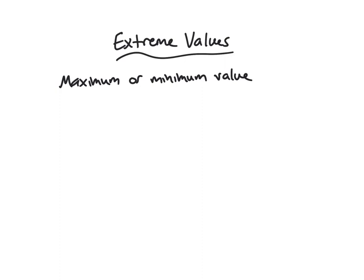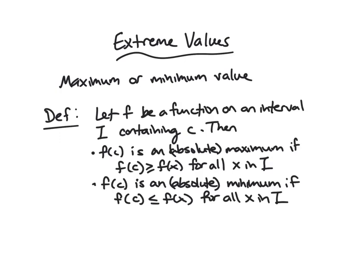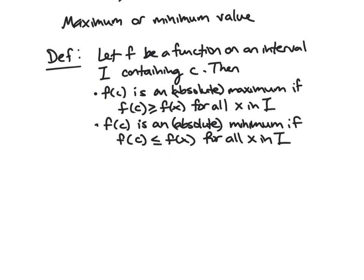So first, let's look at a definition. Okay, so here's our definition. Let f be a function on some interval i containing the point c. Then f of c is an absolute maximum. So we could just say maximum, but we'll have relative maximums later, where you're looking kind of locally. So we'll say absolute if f of c is greater than or equal to f of x for all x in your interval.